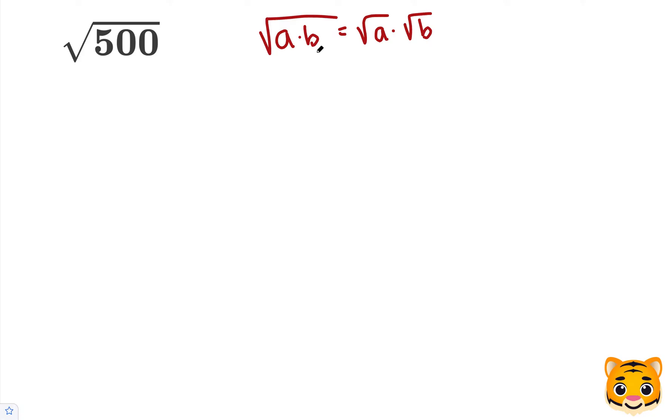This means that if we have two numbers multiplied by each other inside a square root, we can separate out into individual square roots multiplied by each other.